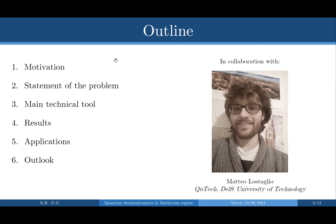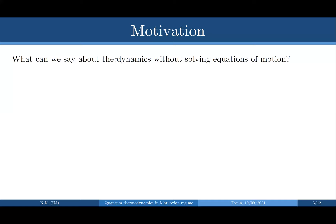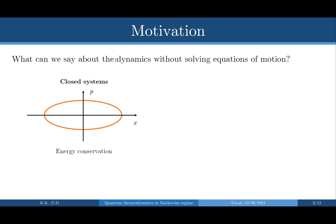Let me start by asking: what can we say about the dynamics of a given system without solving the equations of motion? In other words, are there some fundamental constraints that are quite model-independent, that allow us to say that some things can and some things cannot happen? For closed systems we have conservation laws. For example, if you consider a classical harmonic oscillator in one dimension and you tell me its momentum and position, you don't need to solve the equations of motion to know that at any given future time its position in phase space would be restricted to the ellipse corresponding to the fixed energy.